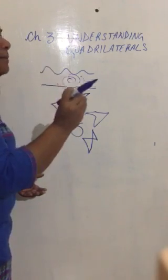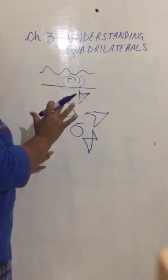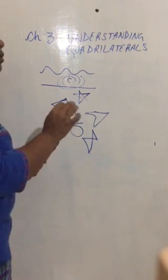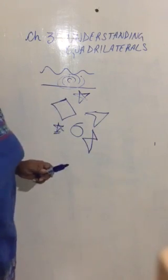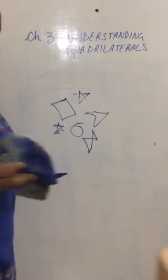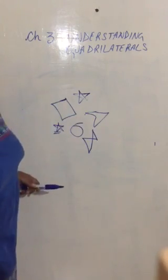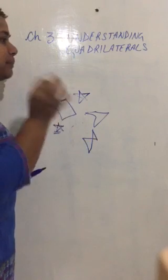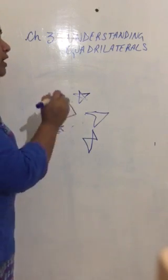Now what is a simple closed curve? A simple closed curve is a closed curve which does not intersect itself at any point. Since we are discussing closed curves now, I am removing the open curves so you can be clearer. So the closed curves we have — a closed curve which does not intersect itself at any point is called a simple closed curve.